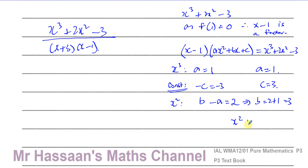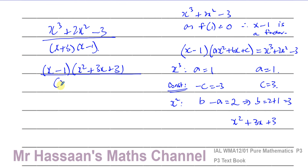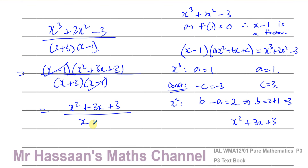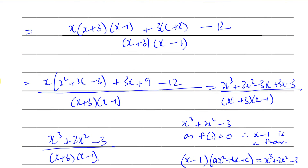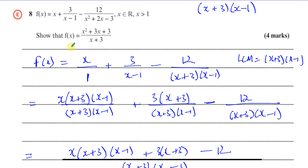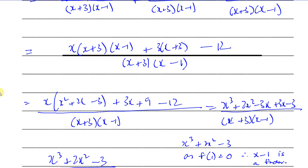So x cubed plus two x squared minus three factorizes as x minus one times x squared plus three x plus three. Putting this over x plus three times x minus one, the x minus one factors cancel out, leaving x squared plus three x plus three over x plus three. And that is exactly what we had to show: f(x) equals x squared plus three x plus three over x plus three.